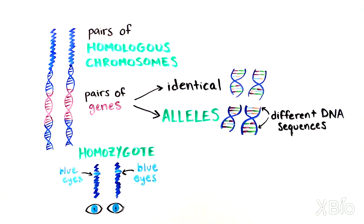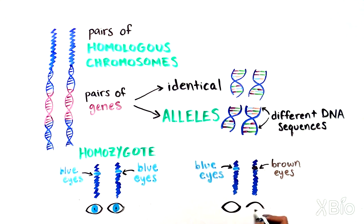However, sometimes the two alleles produce different phenotypes, for example, blue eyes and brown eyes. This makes a person heterozygous. The actual outcome in the person, for example, what eye color they end up with, depends on whether one allele is dominant over the other.